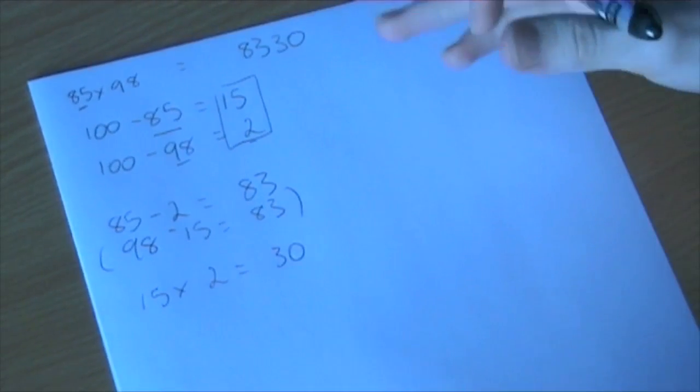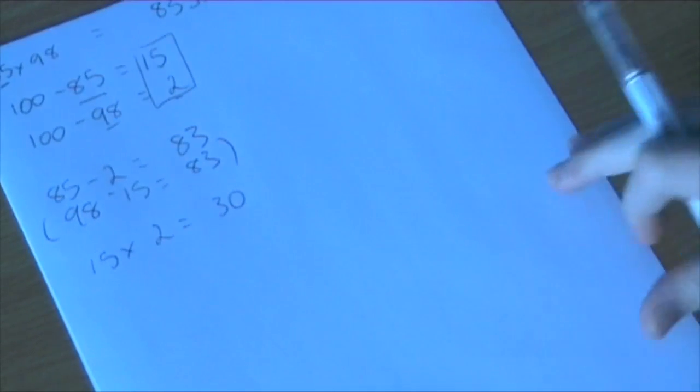But when I first saw this, it left me wondering how that could possibly work. Now algebra can kind of explain it. It doesn't fully explain how you can do the steps separately, but it does explain how the trick manages to get the right answer.